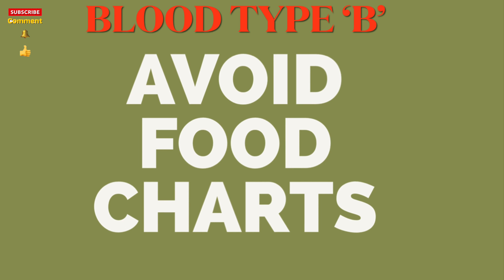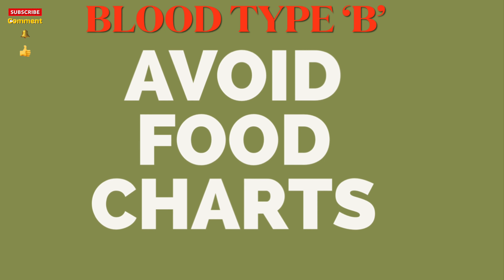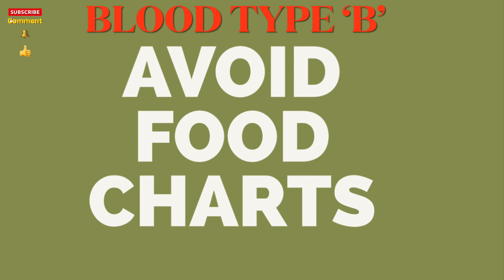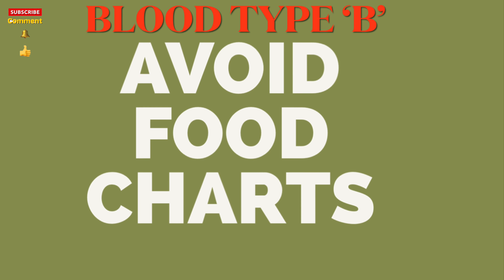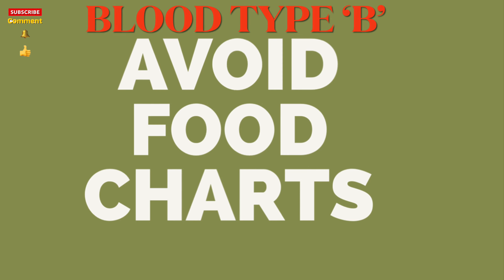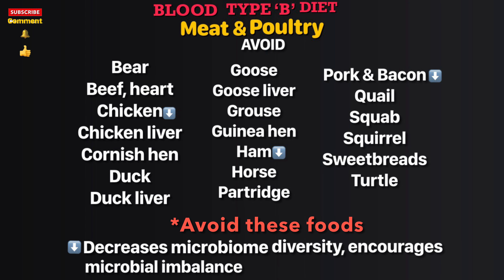Avoid foods for blood type B — it's best to eliminate the avoid list of foods from your diet. All foods with a downward arrow decrease microbial diversity and encourage microbial imbalance. Meat and poultry to avoid include: bear, beef, heart, chicken.